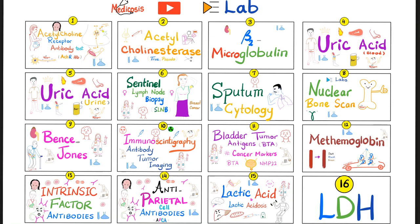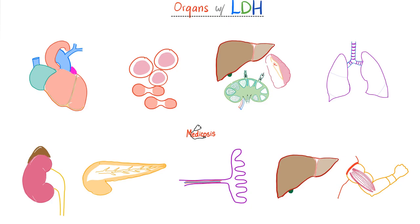This is part of a series called Lab — please watch these videos in order. Today's video is number 16. As a clinician, why should you care about elevated LDH? Because LDH is found in your heart, red blood cells, reticuloendothelial organs, lungs, kidney, pancreas, placenta, liver, and skeletal muscles. So when LDH is high, one of these organs is dying.